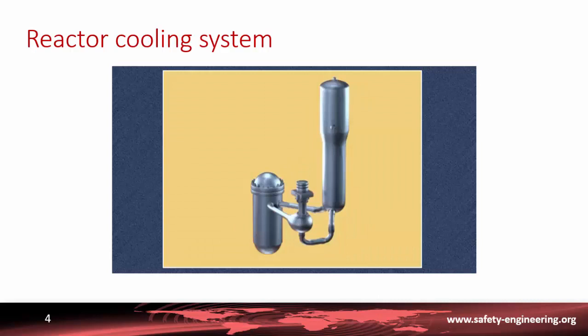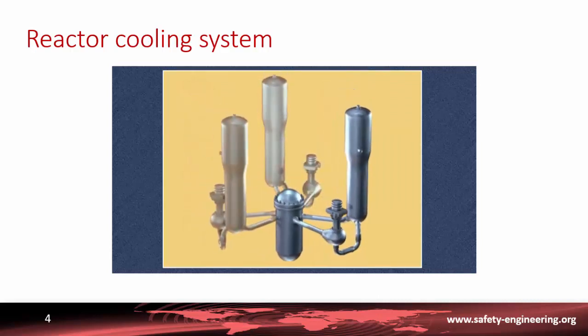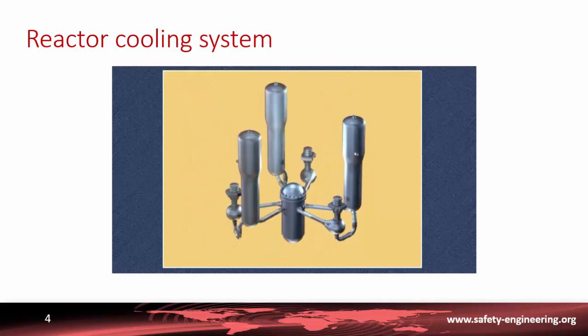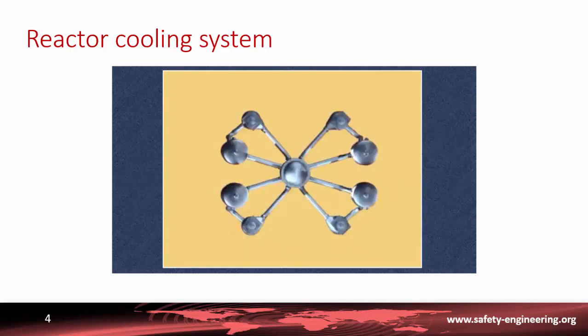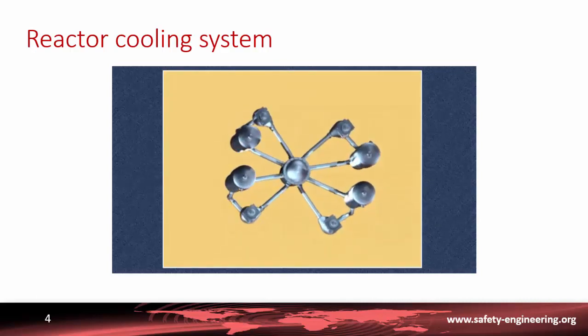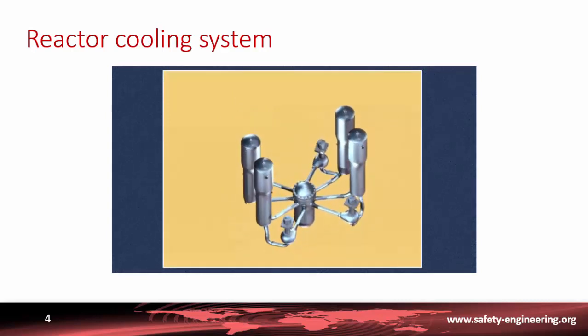Depending on the power rating of the reactor, the reactor coolant system consists of two loops — as is the case in Electra 1 — three loops, or four loops — as is the case in Electra 2.